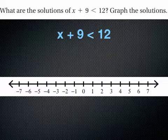We need to do the inverse or opposite of adding 9, which is subtracting 9. Whatever you do to one side of your inequality, you have to do to the other side, just like with equations. Our 9's are going to cancel out, so I'm left with x < 3.